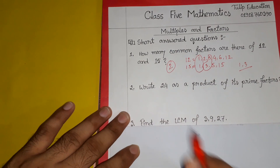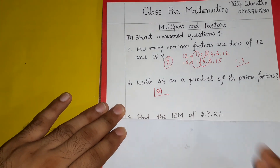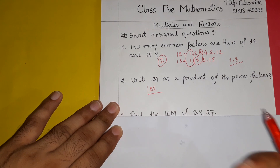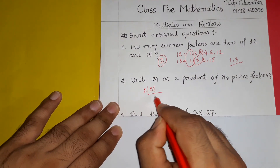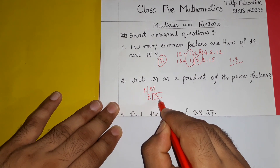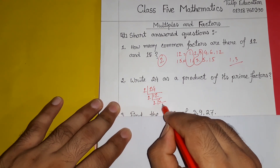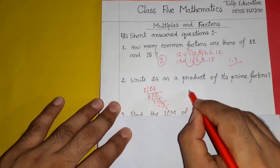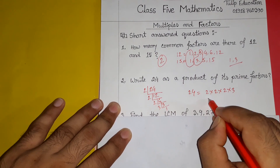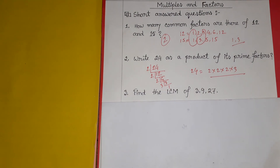We factorize 24 by dividing by 2: we get 12. Divide again by 2 to get 6. Divide again by 2 to get 3. So 24 equals 2 multiplied by 2 multiplied by 2 multiplied by 3. That is the actual answer — 24 represented as a product of its prime factors.